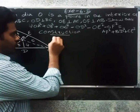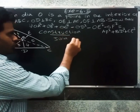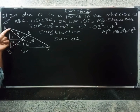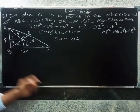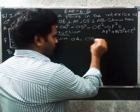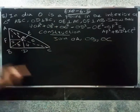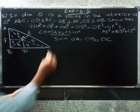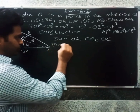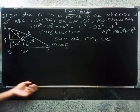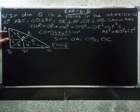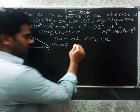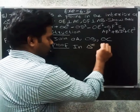Construction: Join OA, join OB, join OC. These are the construction steps. Now for the proof: we consider triangle 1, triangle 3, and triangle 5.